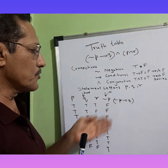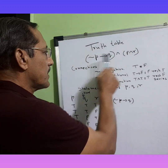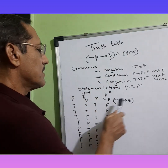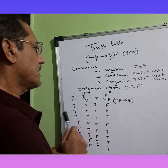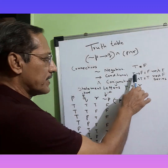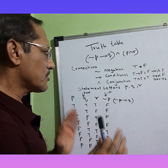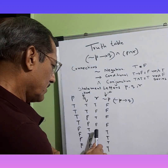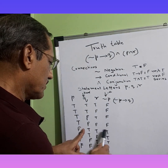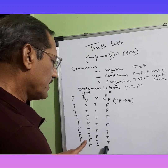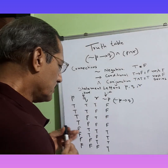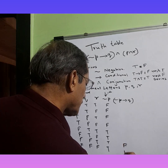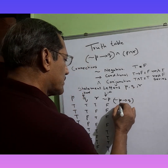Now let's compute negation p conditional q. We already noted that T conditional F is F. Looking at negation p and q: where negation p is T and q is F, that gives false — only those two rows are false, the rest are T.